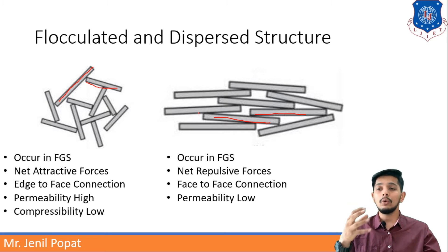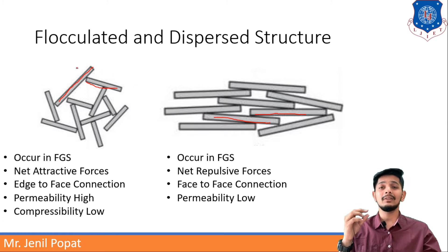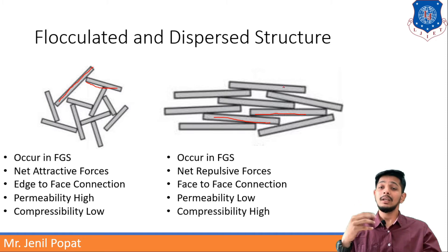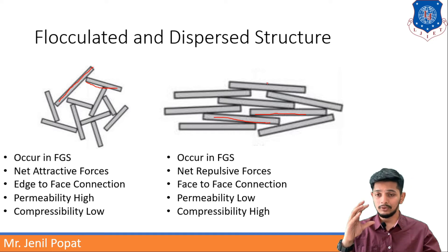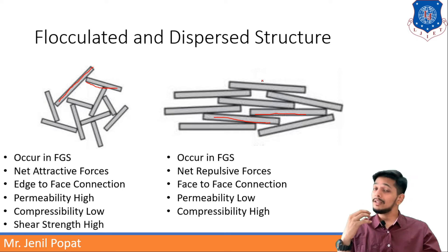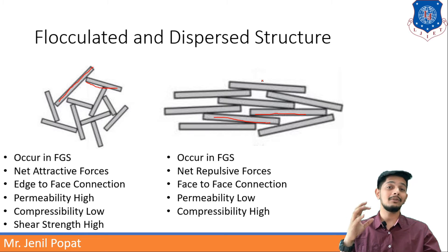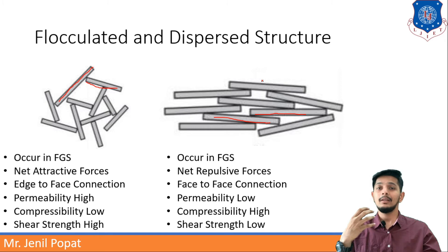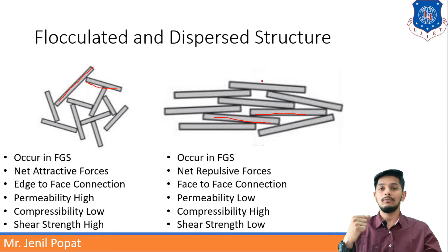Compressibility is low for flocculated structure because attractive forces are there and they are connected edge-to-face, so there are fewer chances of compressibility. But in dispersed structure they are connected face-to-face, so compressibility will be higher in dispersed structure. Whereas in flocculated structure, shear strength will be higher because of its structure. And in dispersed structure, shear strength will be low, as we have discussed.